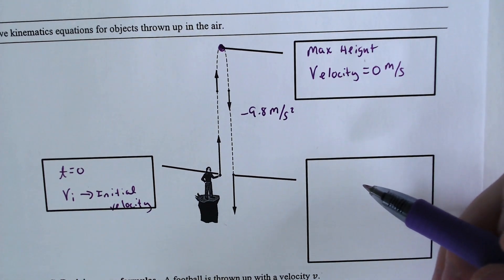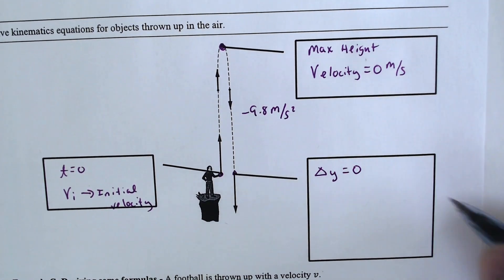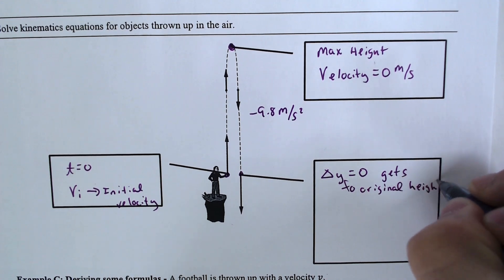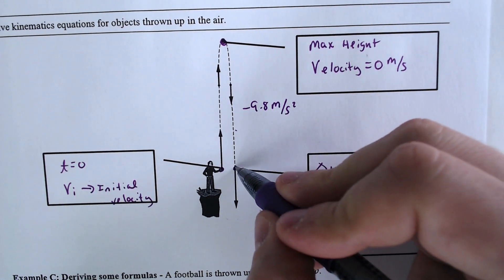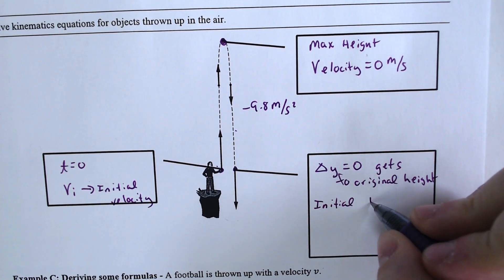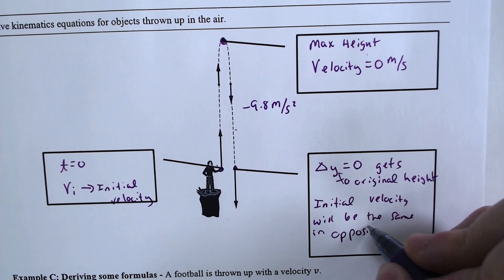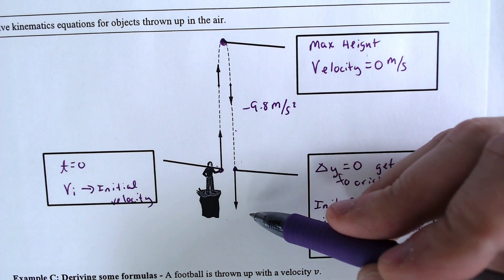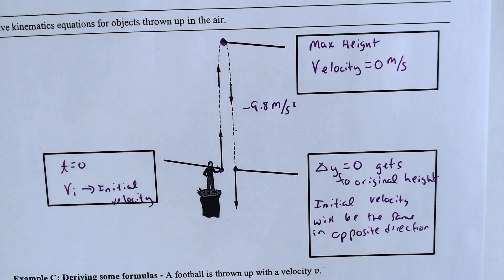At some point the object is going to return to the height that it originally was, and at that point delta y equals zero. The delta y could be positive or negative depending on where it stops. A cool feature: when the object returns to the exact same height, its speed will be the same as the initial velocity but in the opposite direction. The initial velocity was upward; once it gets back to that same height, it would be going that same speed in the negative direction.